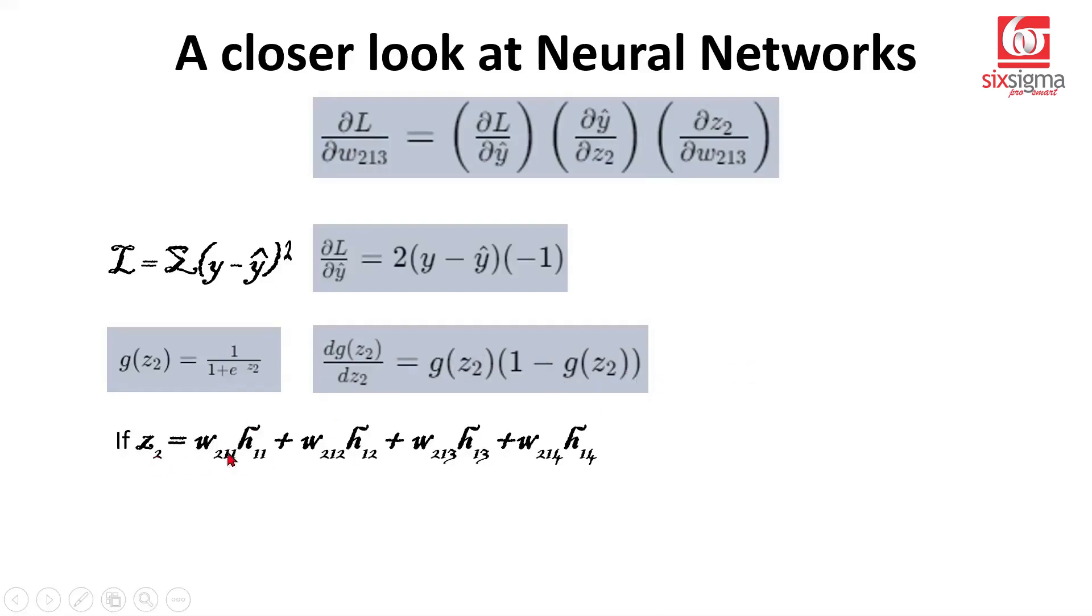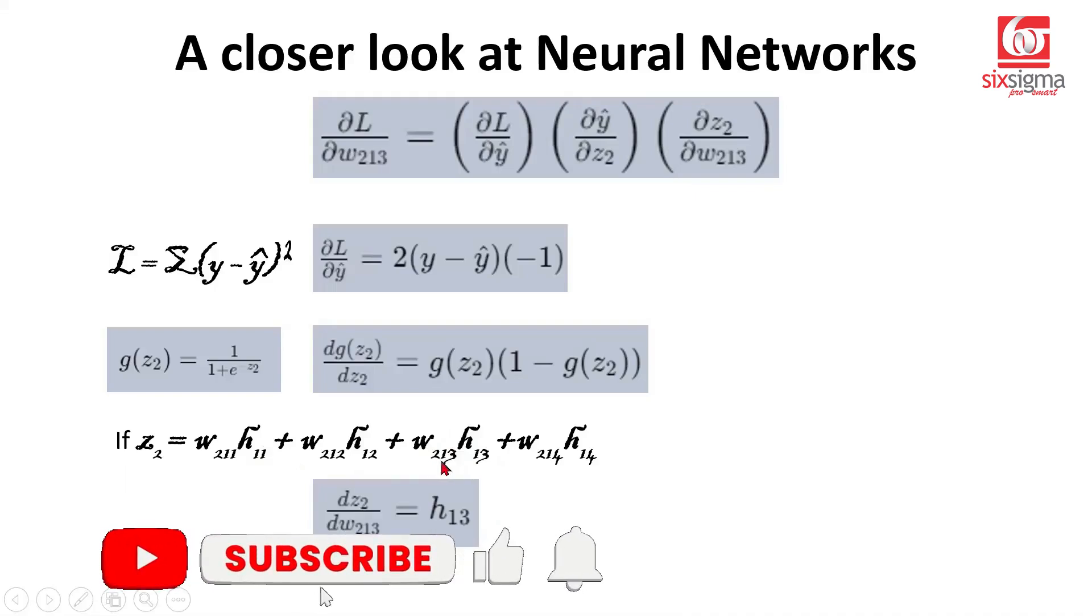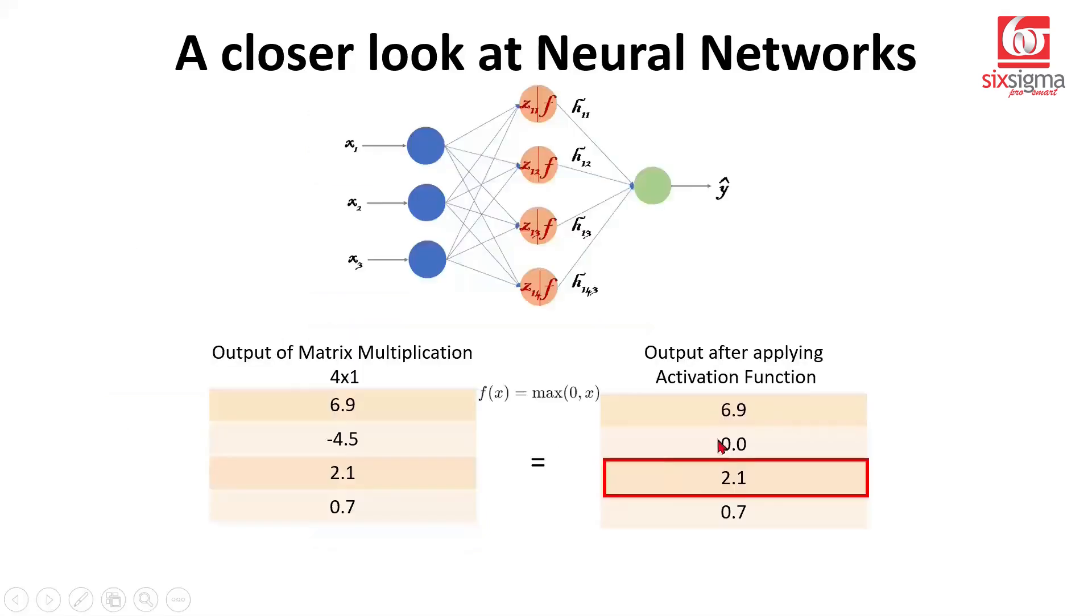Now comes the last piece. If we take a derivative of this with respect to w213, all other terms will become constant. Derivative of a constant is 0. When taking a partial derivative with respect to w213, h13 acts like a constant, so the derivative is going to be h13. These should have been partial derivative signs, but it's okay, we can leave it like this. What is h13? We actually computed this when we got the output from the first activation. This is 2.1, so we know all the values.